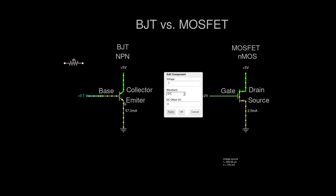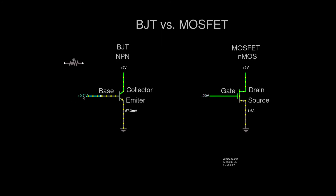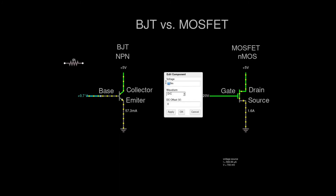Everything below 0.7 volts would theoretically create an open between the collector and emitter leads. In practice it's more flexible, but not as flexible as the MOSFET, which has a higher voltage range because the gate is not shorted. On the MOSFET I could change from 2 volts to 20 volts — 10 times — and only get 1.6 amps. But on the BJT, changing from 0.7 to 7 volts would just go to giga-amps. At 0.8 volts we already get amps, so without resistance in the base-emitter path, control is really limited.